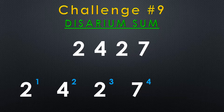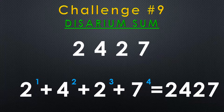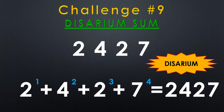We then calculate the sum of these values, and if the result is equal to the original number, then this is called a Desarium number.